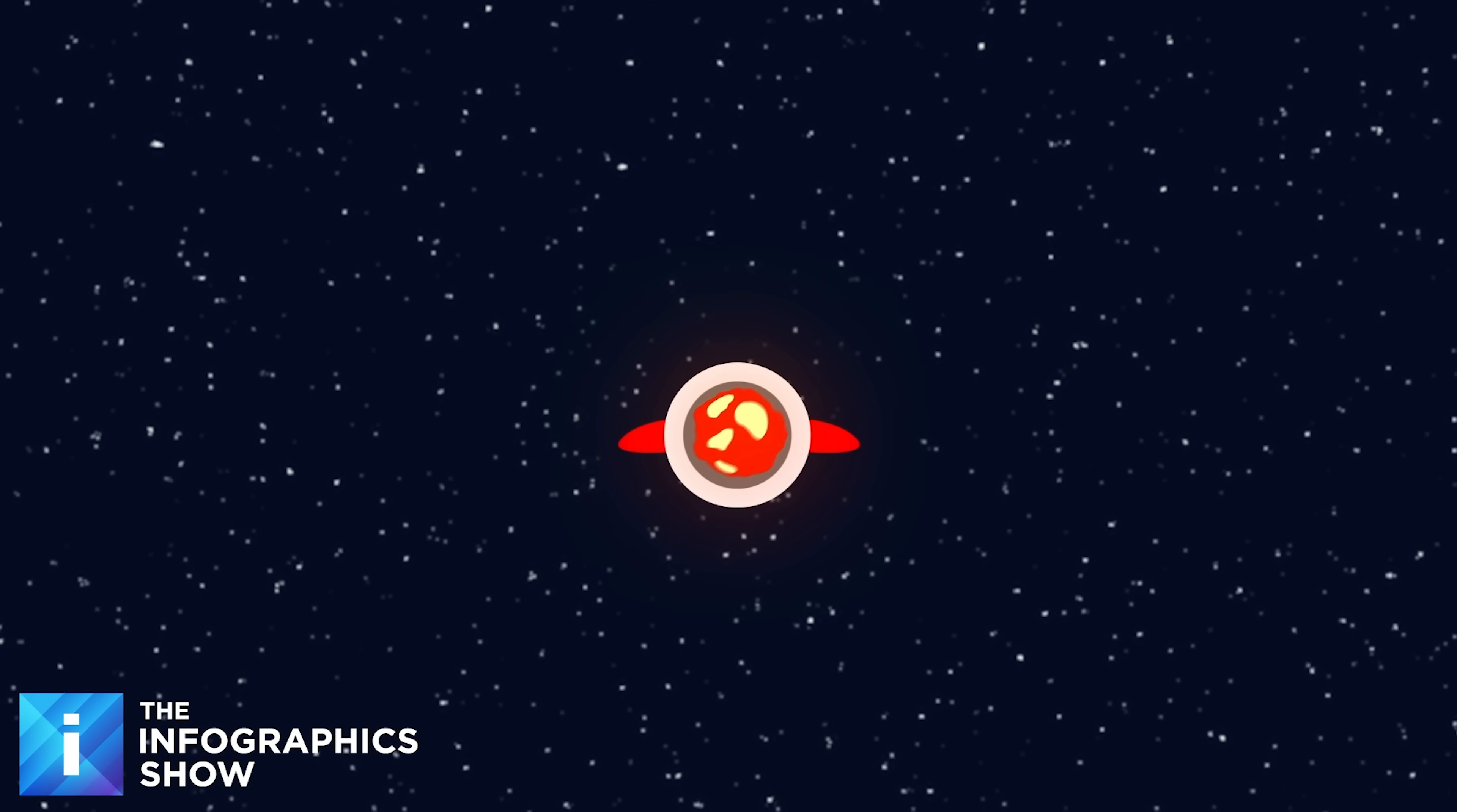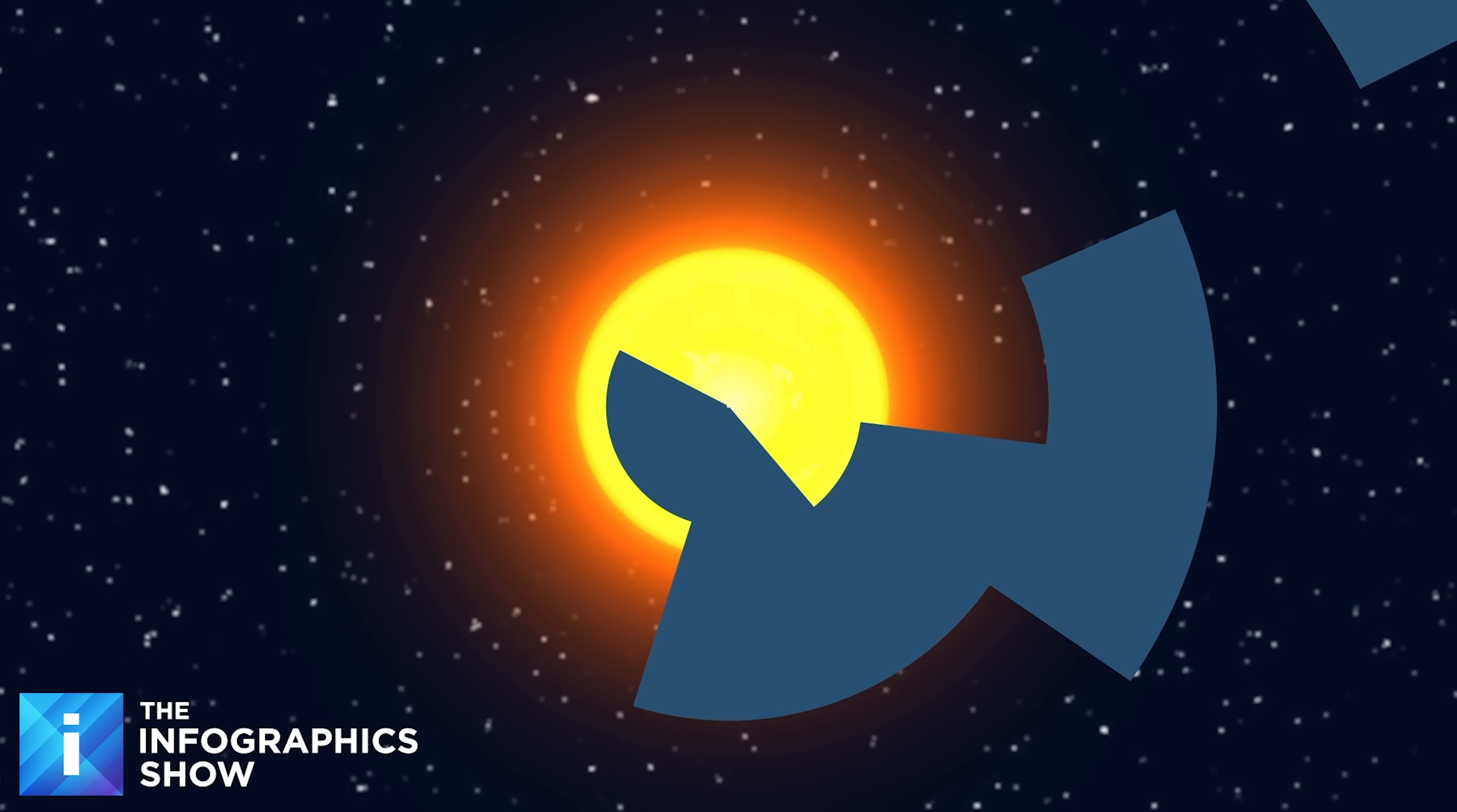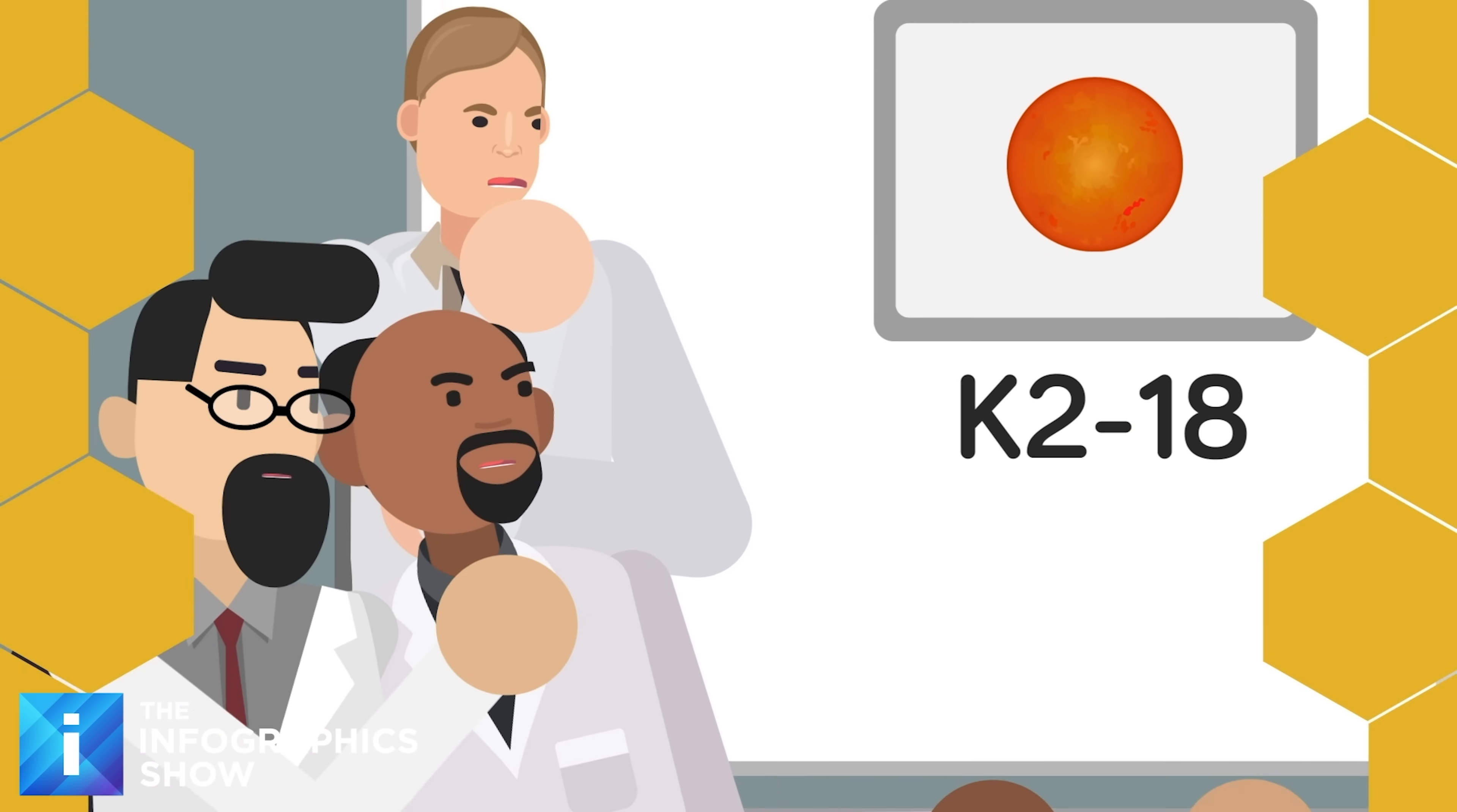Let's travel 124 light years from Earth into deep space where no human will likely ever venture. Out here, telescopes like James Webb are our only eyes into the far reaches of the universe. Nestled within the constellation Leo lies K218, a red dwarf star. The smallest kind of star, and one of the most common.